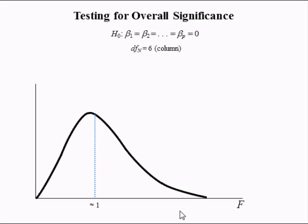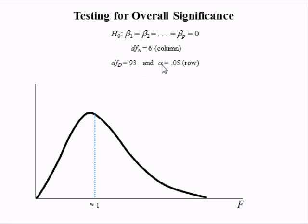The degrees of freedom for the numerator of the F-statistic was 6 because we had 6 independent variables. The degrees of freedom in the denominator was 93, because the sum of squares due to error is in the denominator of the F-statistic and had degrees of freedom equal to 93. The F-critical value is found in column 6 and the row corresponding to 93 degrees of freedom and a significance level of 0.05. Hence the critical value is 2.20, found at the intersection of that column and row in the F-distribution table.